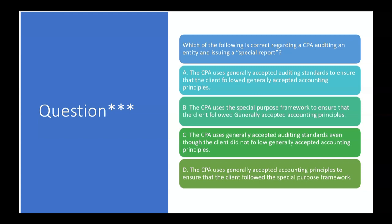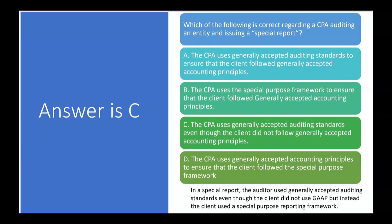In a special report, the CPA did an audit, which means the CPA followed GAAS — generally accepted auditing standards — even though the client did not follow GAAP, but instead followed a special purpose framework. So the answer is letter C.